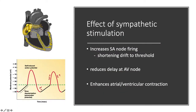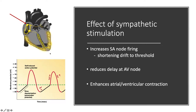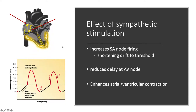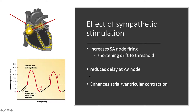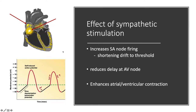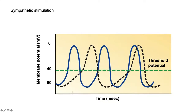With sympathetic stimulation we see increased SA node firing due to shortening the drift to threshold, so we get action potentials more often. There is also a reduced delay at the AV node, shortening the time between atrial and ventricular contractions. Additionally, there is enhanced atrial and ventricular contraction because both are innervated by the sympathetic cardiac nerves. On the graph, the blue line shows the shortened drift to threshold compared to the inherent black dashed line.